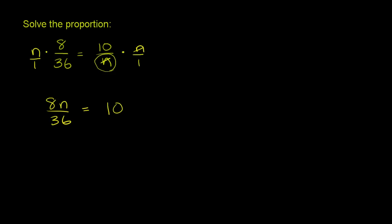Now we can multiply both sides of this equation. To really get rid of that 36 in the denominator, we can multiply both sides by 36. Or you could imagine 36 over 1. Either way, 36 over 1 is the same thing as 36. This 36 cancels out with that 36.